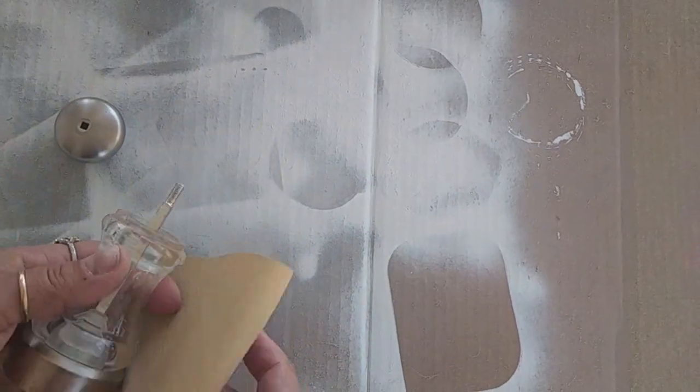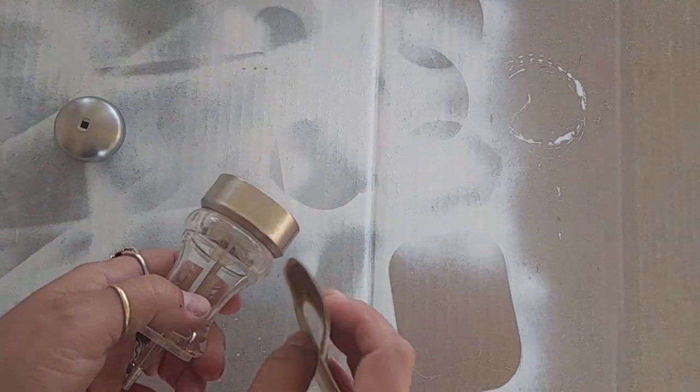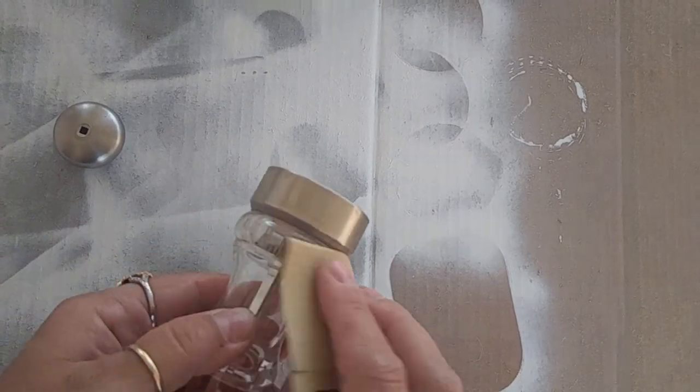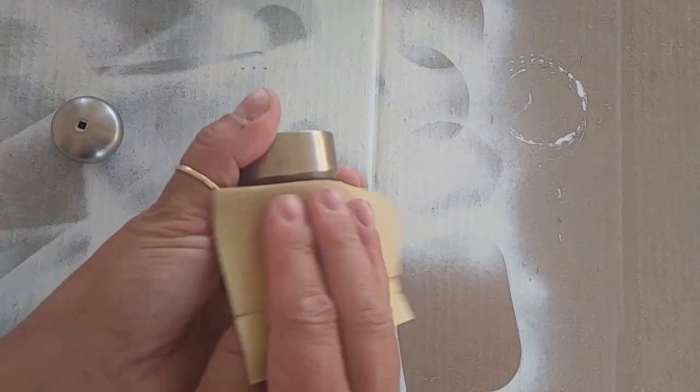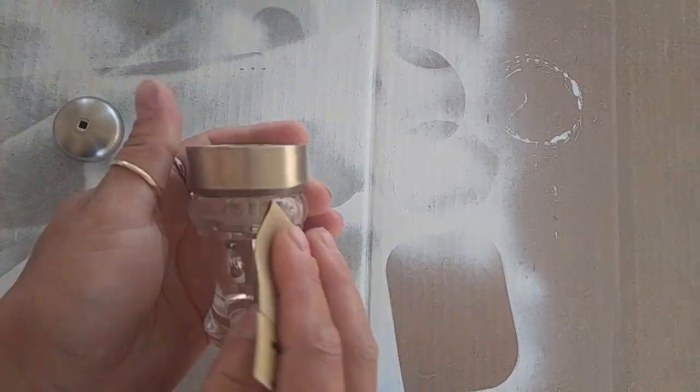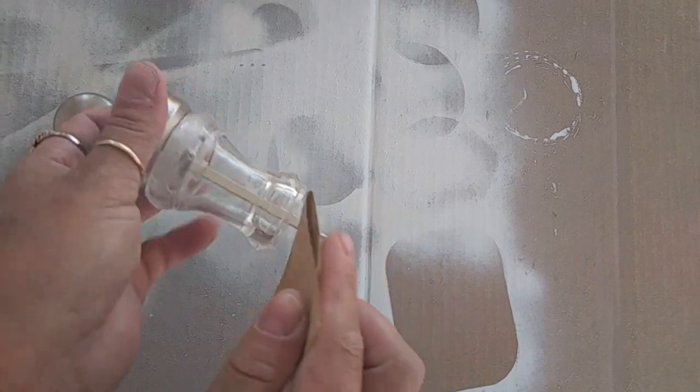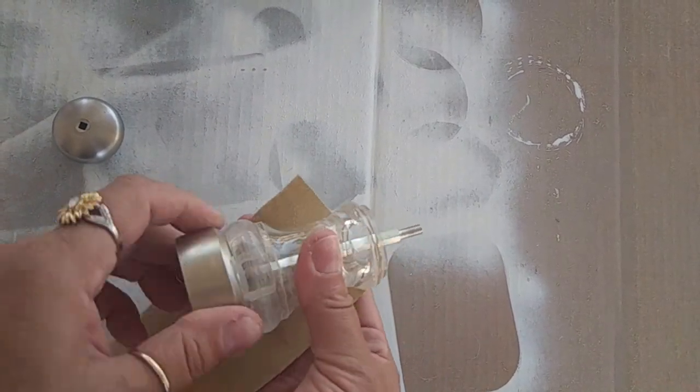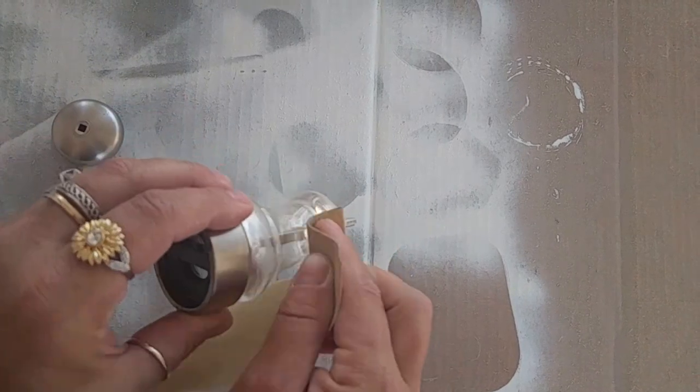So here I am and I am sanding this, sanding the plastic because that's what they are. They're just plastic. They're not like glass or anything. But I want the silver spray paint to stick. So I wanted to make sure to give it a light sanding and I think I'm using like 120 grit, 160 grit. I don't remember.